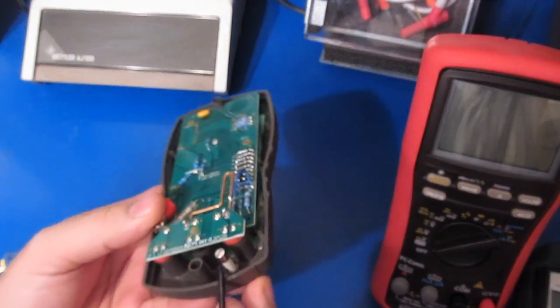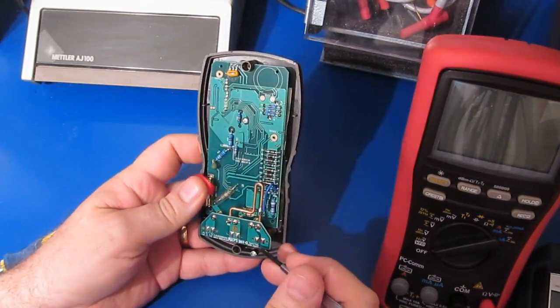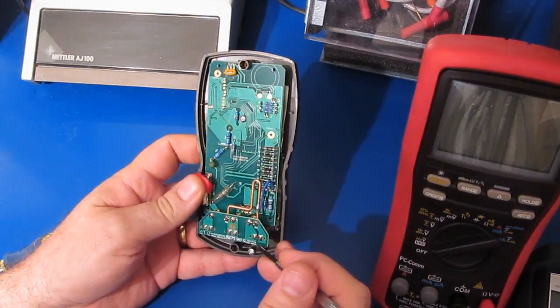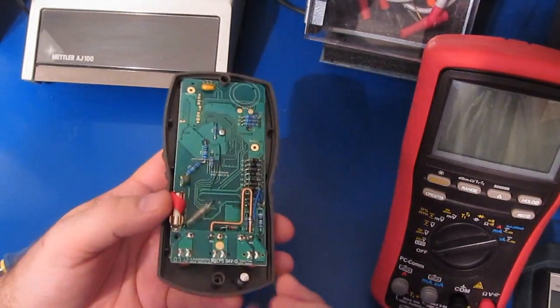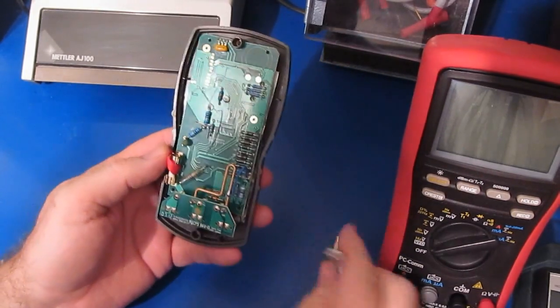Again looking at the inside you can see they have a small spare fuse here. These are just rated for 250 volts it looks like at 500 milliamps. They are a ceramic type fuse. So that's good.